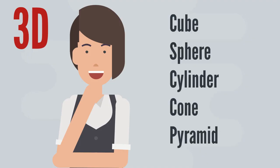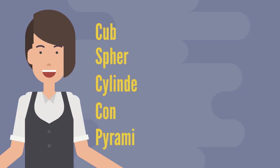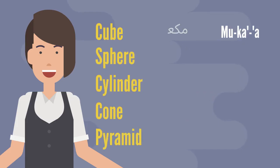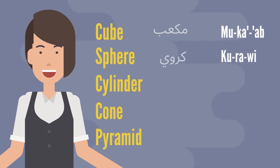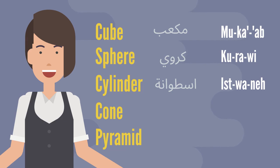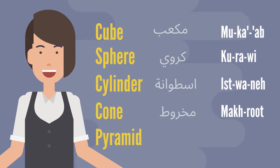Next, let's review the 3D objects: cube — مكعب, sphere — كرة, cylinder — إسطوانة, cone — مخروط, pyramid — هرم.